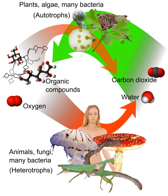A heterotroph, from ancient Greek 'heteros' meaning 'other' plus 'troph' meaning nutrition, is an organism that cannot produce its own food, relying instead on the intake of nutrition from other sources of organic carbon, mainly plant or animal matter.